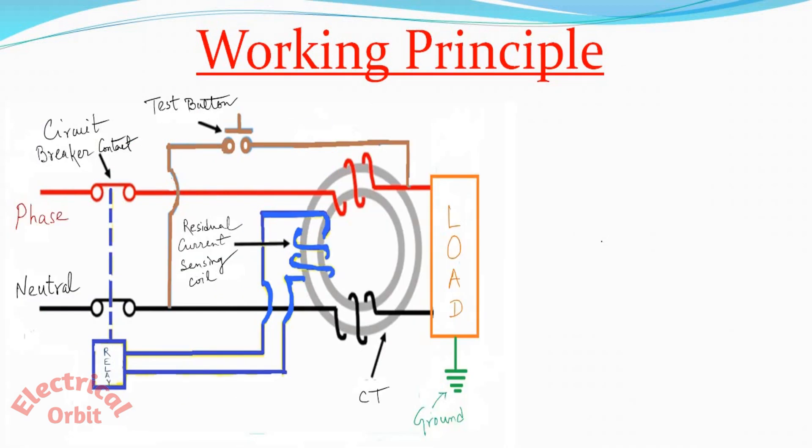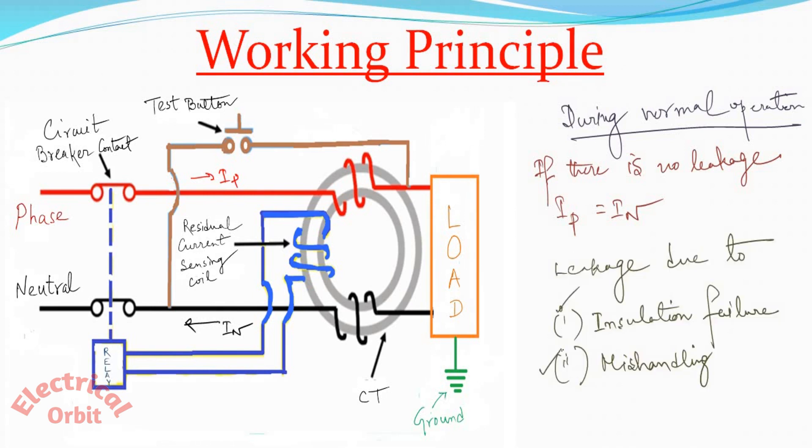This is the test button and this is the circuit breaker contact. The CT and the relay part are inside. Now come to the working principle. During normal operation, the input current or just say the phase current remains equal with the neutral current. Because if there is no leakage, then input current or phase current is equal to neutral current. But if there is any kind of leakage, that is due to insulation failure or mishandling, then this input current is not equal to the neutral current because there is some sort of leakage.